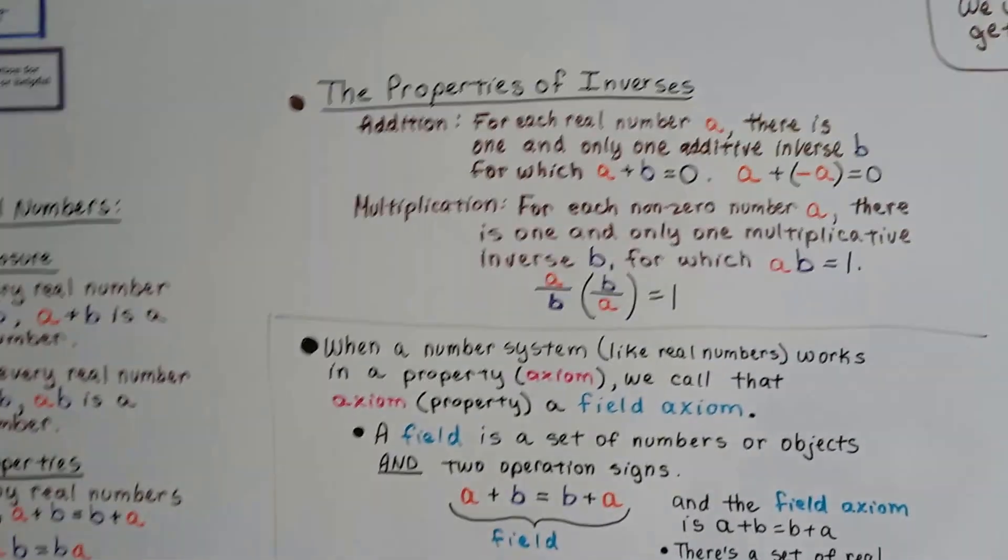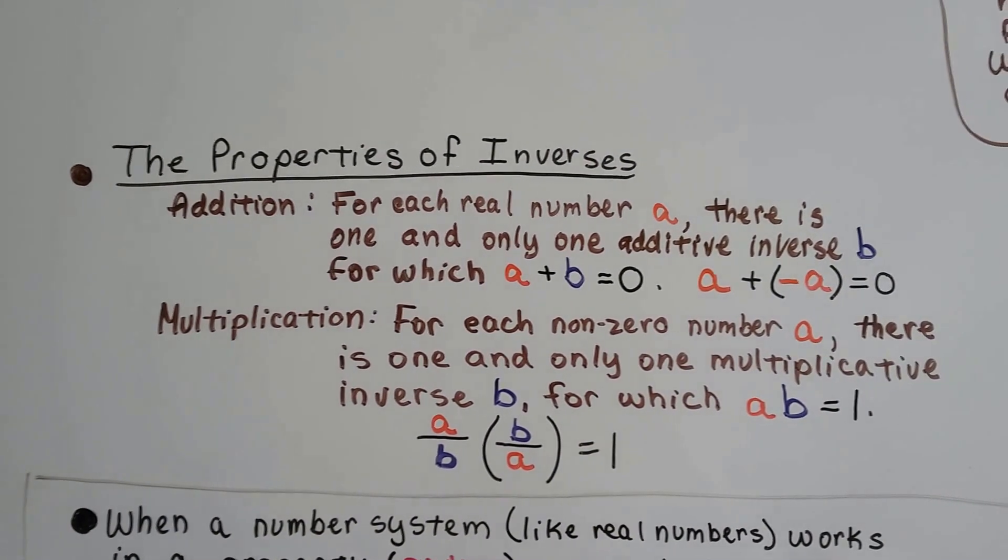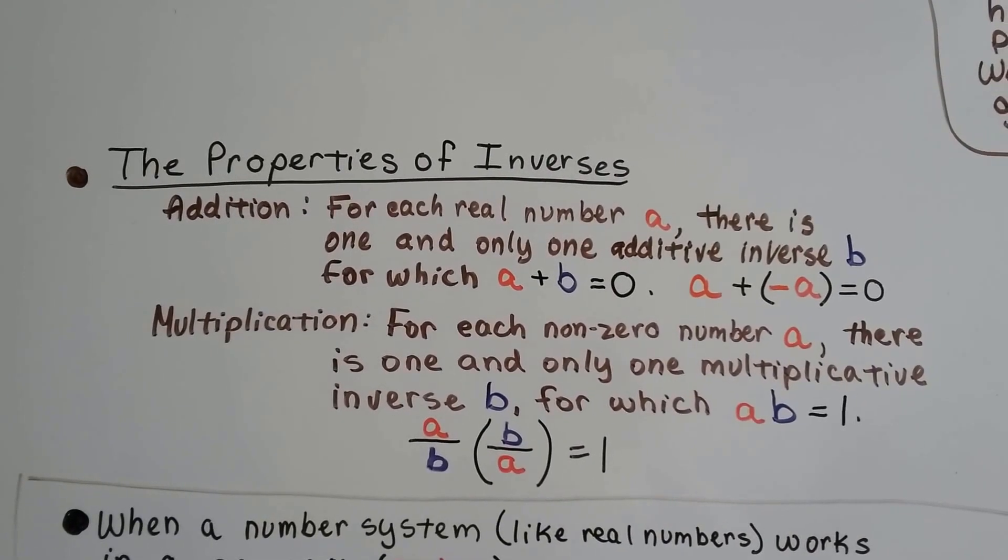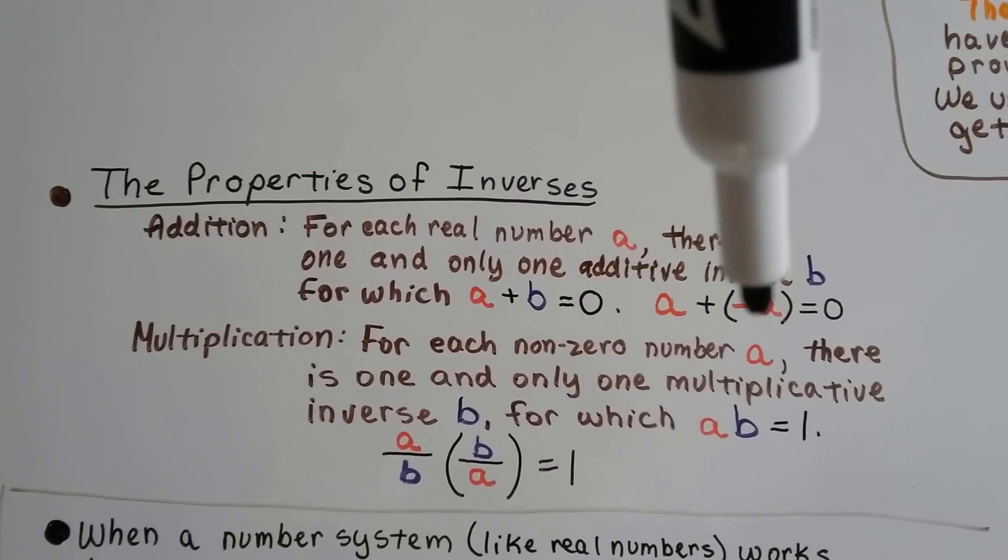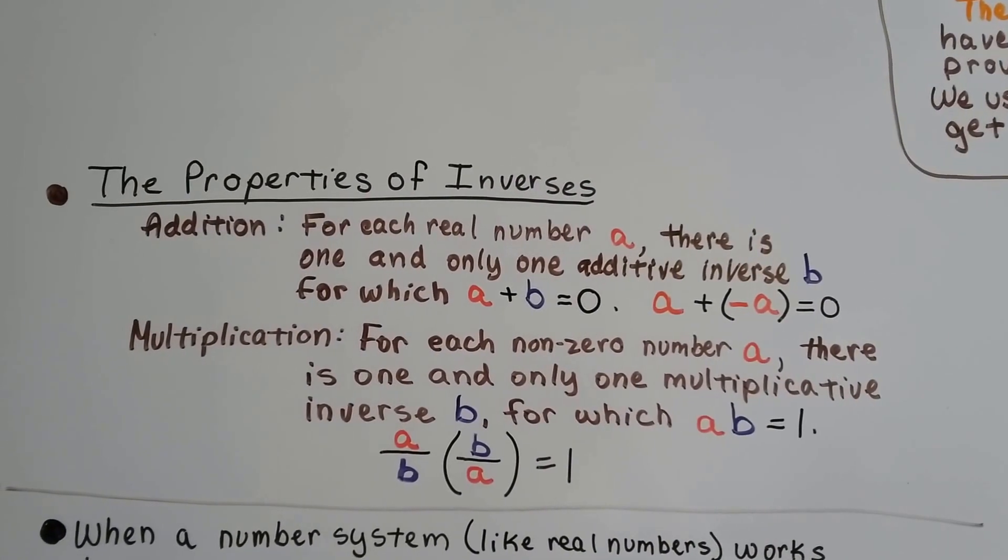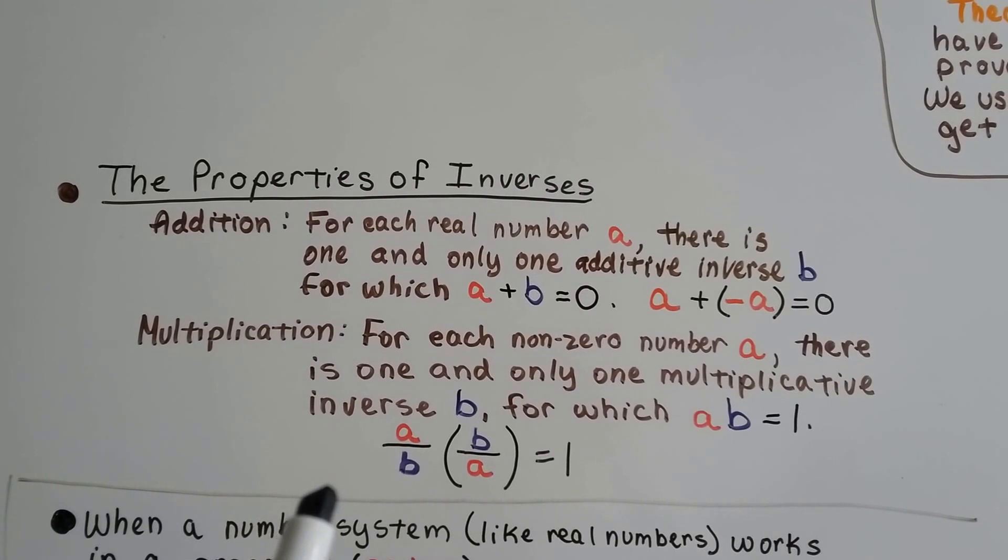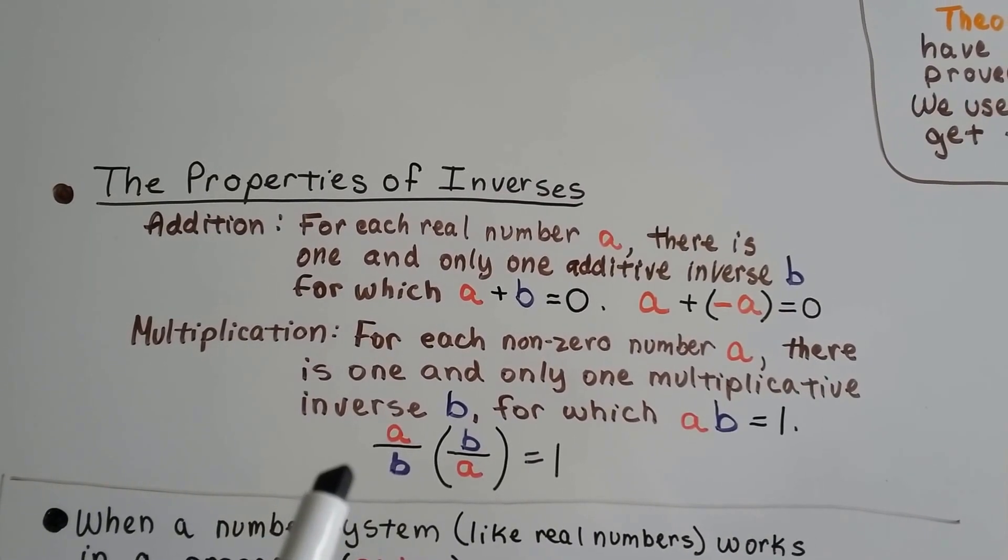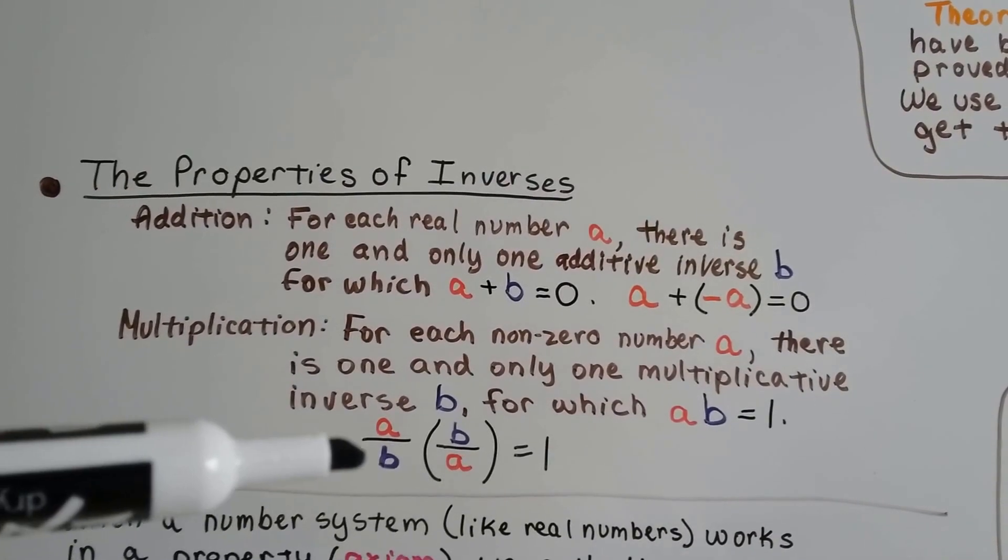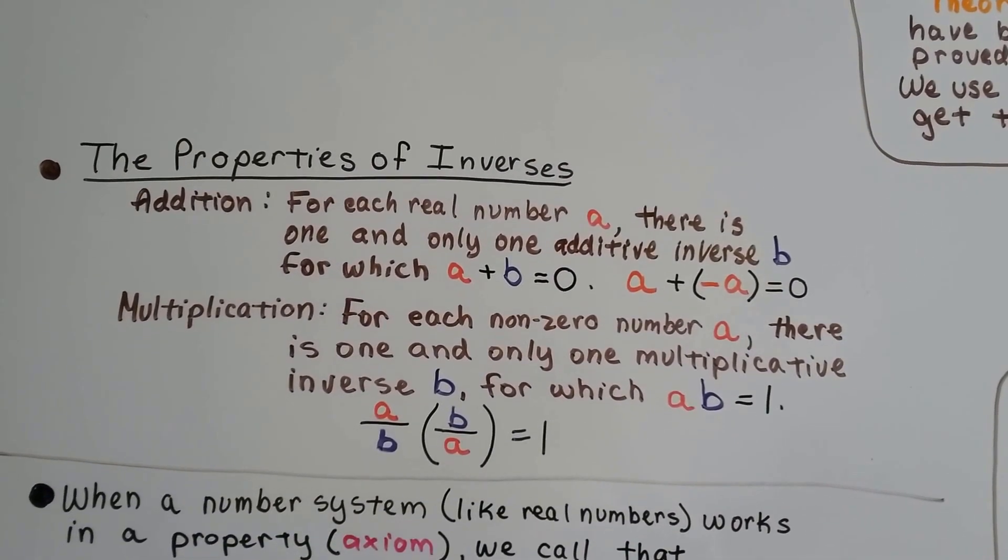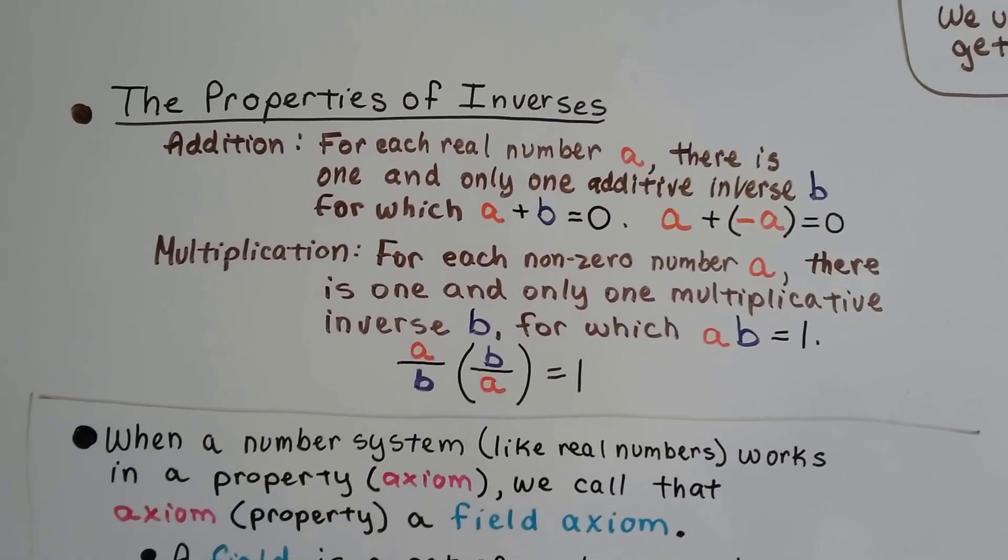Now, here comes the sassy property. It's the property of inverses. It's not agreeable with everybody. So for addition, for each real number A, there's one and only one additive inverse B, for which A plus B will equal 0. So if we have A and we add a negative A, it'll equal 0 to create a zero pair. We've talked about that. And for each non-zero number A, there's one and only one multiplicative inverse B, for which A times B is going to equal 1. So it works if we have A over B and we multiply it by the reciprocal B over A. That'll equal 1, because the numerators and denominators are going to be the same. So we're going to talk about this one a little bit more in a couple seconds.